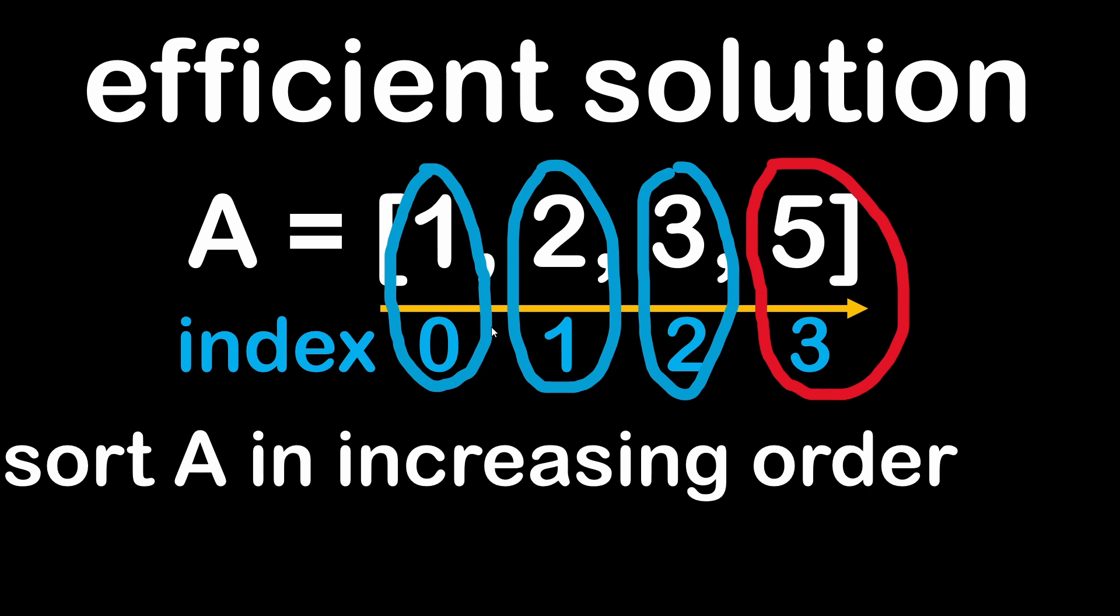So we can start a loop going through the array and checking if this relation between the index and the value is verified. And when we find the first element where this relation is not verified, then we would have identified our missing element. As you can see in this algorithm, we are visiting the array only once just to perform our test on each element.